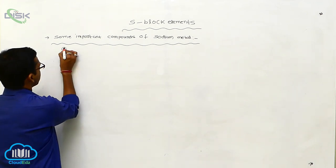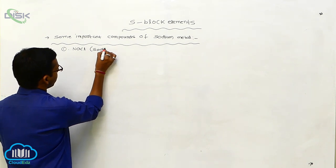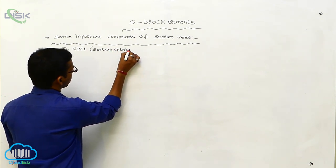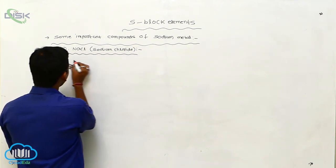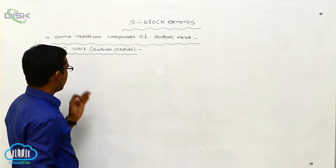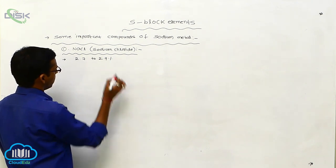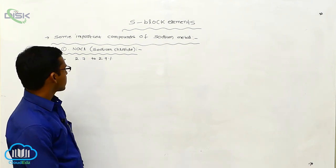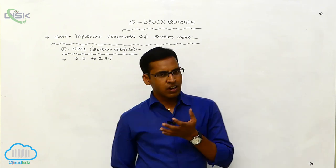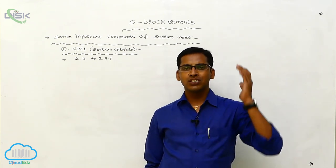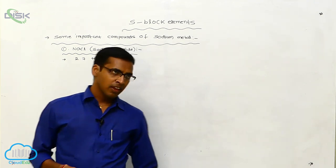The first compound is sodium chloride. Generally, sodium chloride is present in seawater in the range of 2.7 to 2.9 percent. In India, most of the seawater undergoes vaporization, and through this vaporization process we prepare sodium chloride under natural conditions.